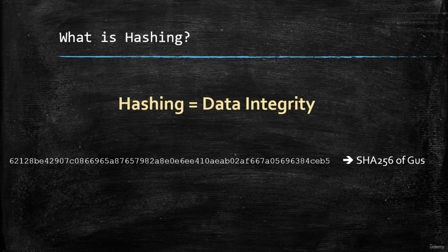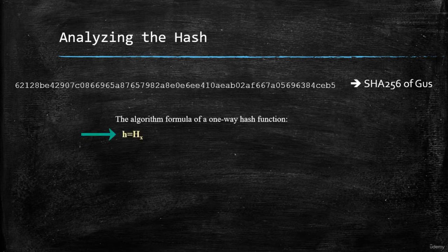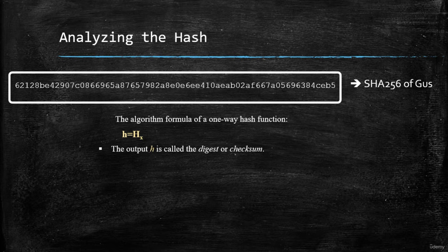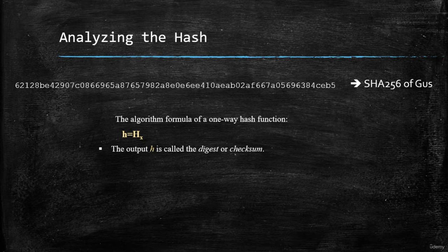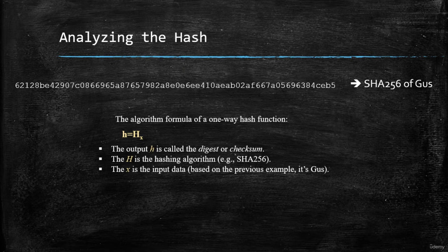Let's analyze a typical hash. Using SHA-256, we converted the word 'gus' into its hashed value. Computer scientists use the notation lowercase h = capital H of X, where lowercase h is the output in hexadecimal format called a digest or checksum, capital H is the hashing algorithm (SHA-256 in our example), and X refers to the input data ('gus' in this case).